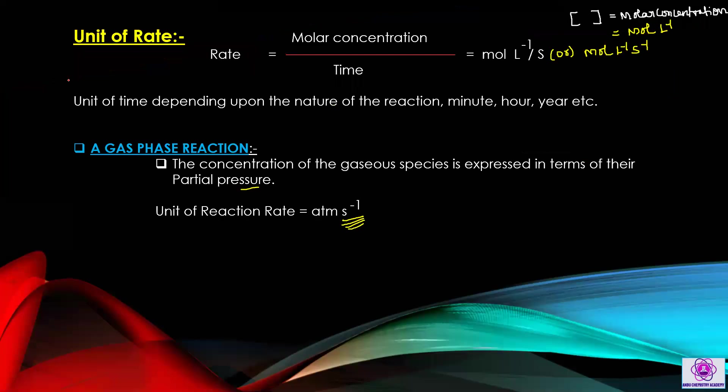Next, the unit of rate. In a reaction, the rate formula is: rate equals molar concentration by time. The unit of molar concentration is mole per liter. So rate has units of mole per liter per second, which we can express as mol L⁻¹ s⁻¹. Since time may differ from reaction to reaction, the unit may also be mole per liter per minute, or mole per liter per hour, or mole per liter per year.